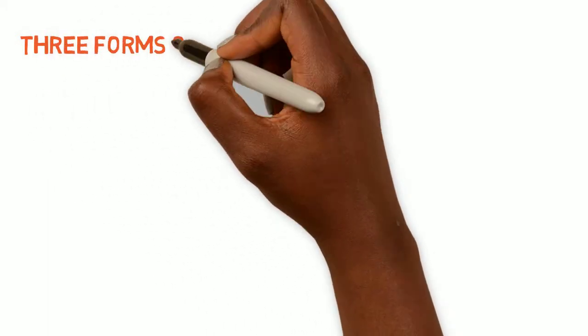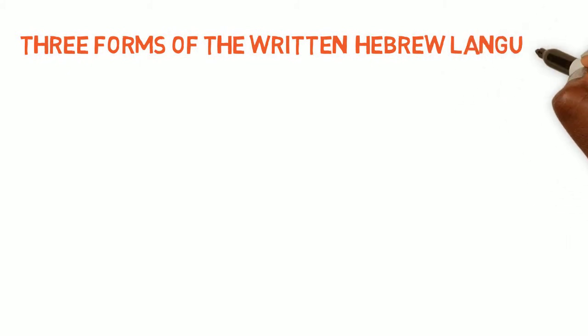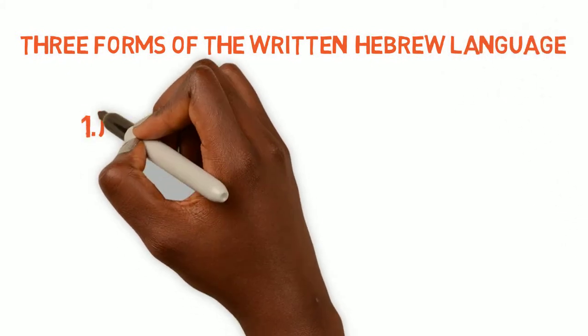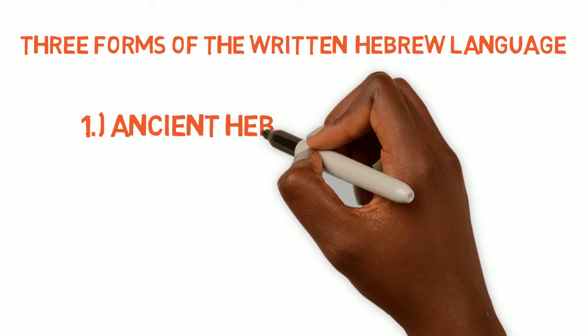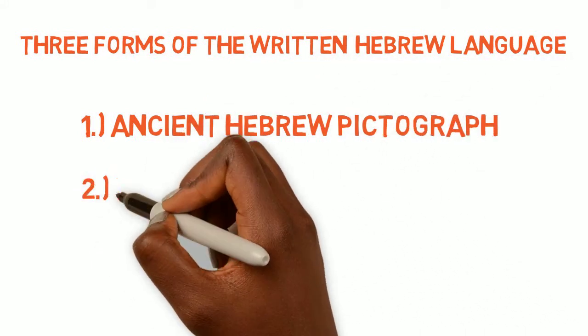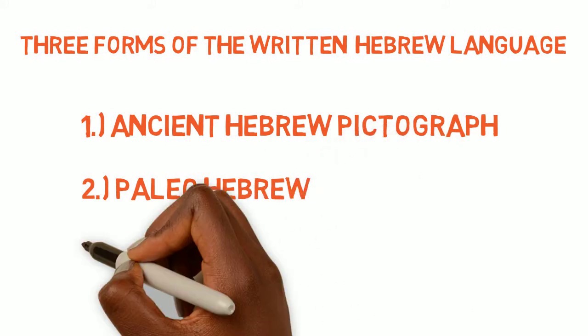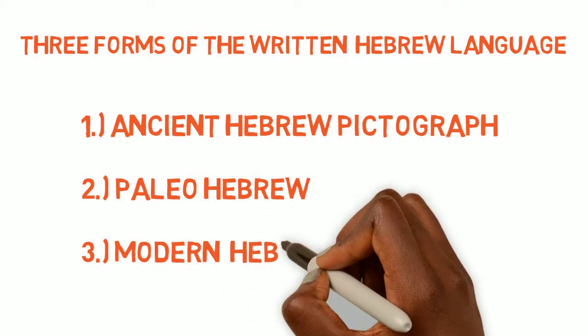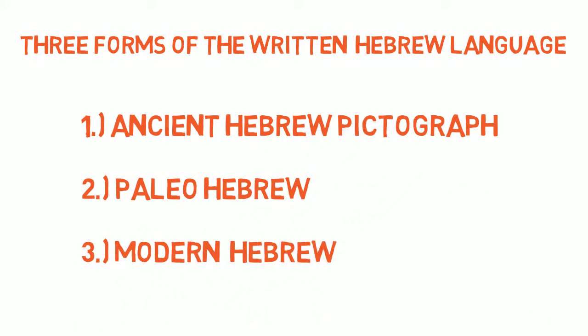We will go over the three main forms of the written Hebrew language: the Ancient Hebrew Pictograph, the Paleo-Hebrew, and a little bit about the Modern Hebrew, so that we are able to trace the Modern Hebrew back to the Pictograph and Paleo-Hebrew.